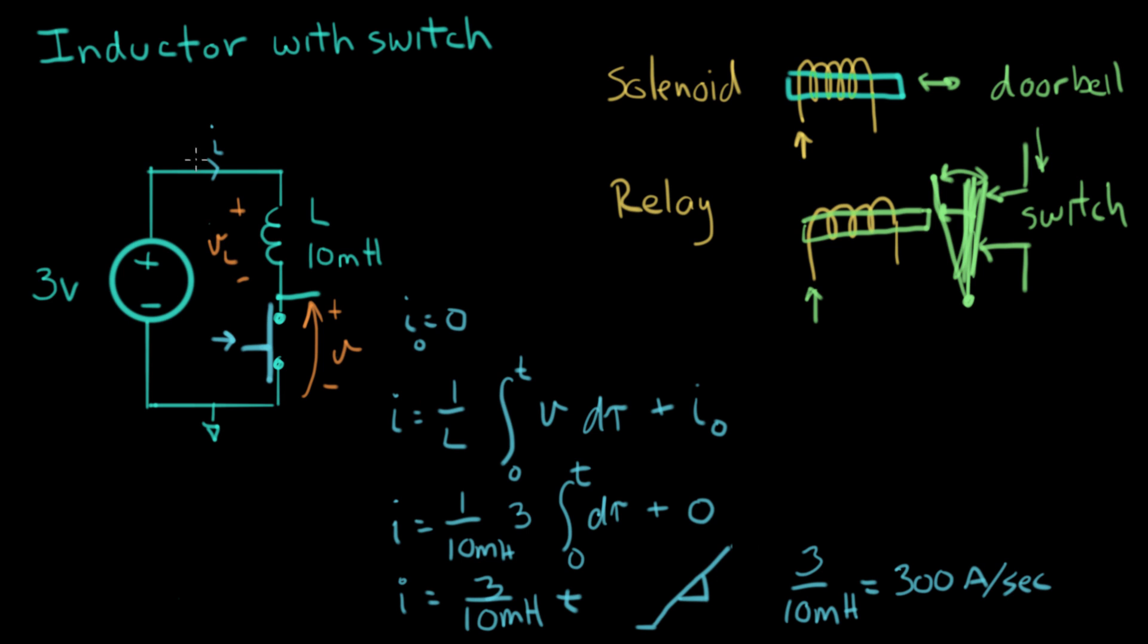Now, in a real circuit, there'll be real resistances in here. But, and so there'll be a limit to the amount of current that will be determined by the resistor. But for the purposes of showing you just how this inductor equation works, that's the kind of slope you would see at the initial closing of the switch.